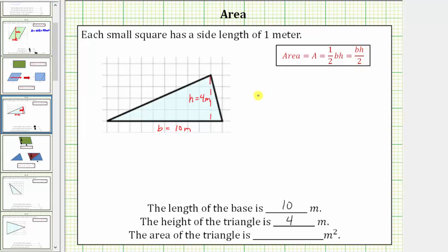So for this triangle, the area is equal to one-half times 10 meters times 4 meters. Simplifying, one-half times 10 is 5. 5 times 4 is equal to 20. And the units are square meters. Exactly 20 square meters will fit inside this triangle.